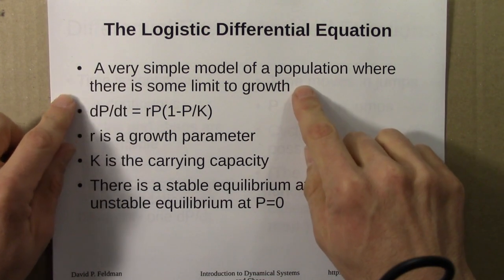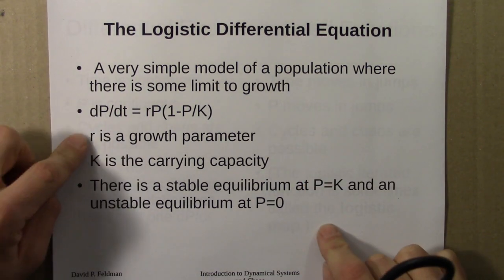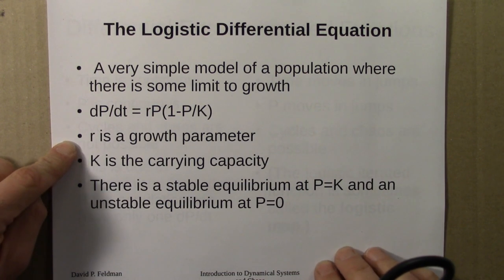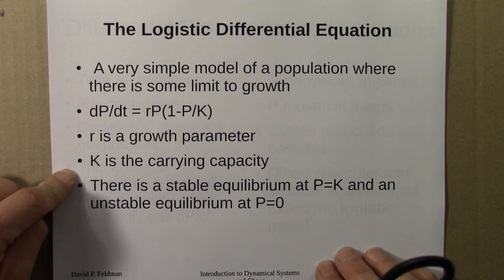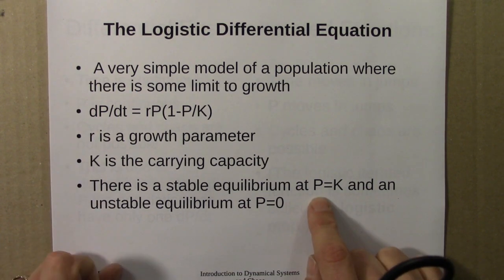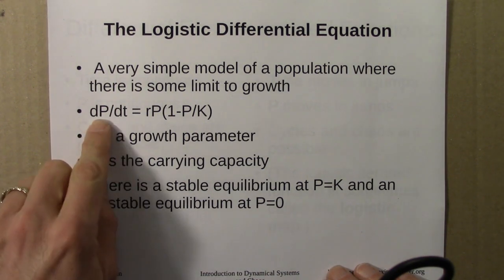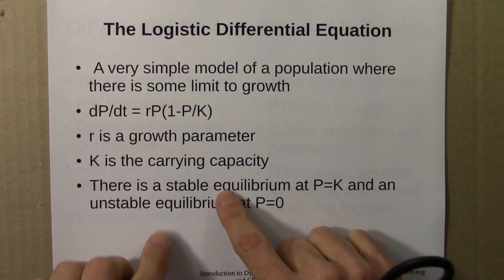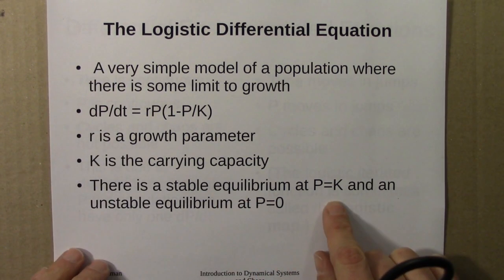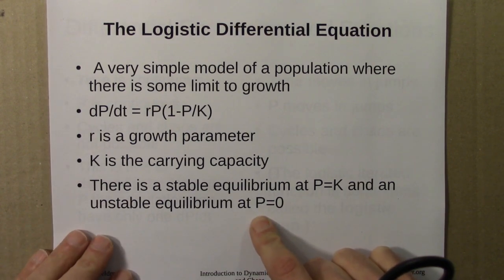As before, it's a very simple model of population growth where there's some limit to growth. The quantity r is the growth parameter, K is the carrying capacity, and there's a stable equilibrium at P=K. That's the equilibrium value to which the population will be attracted—a stable equilibrium or attractor at K, and an unstable equilibrium or repeller at P=0.